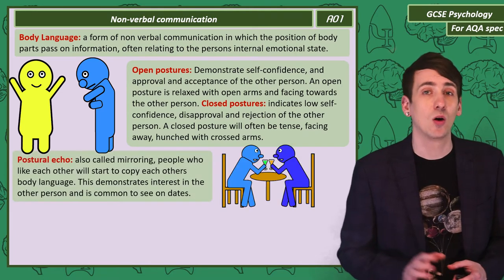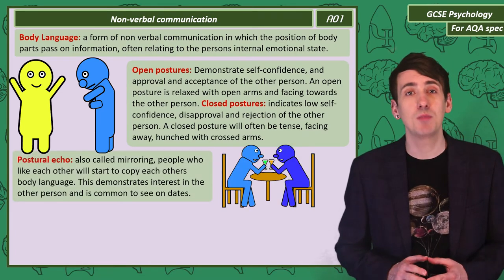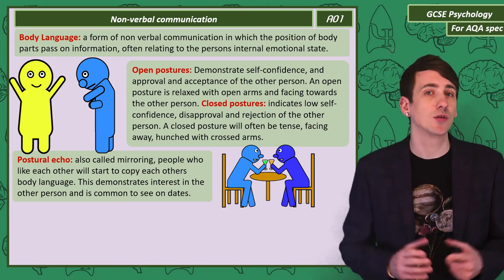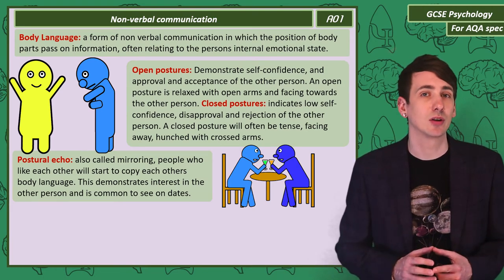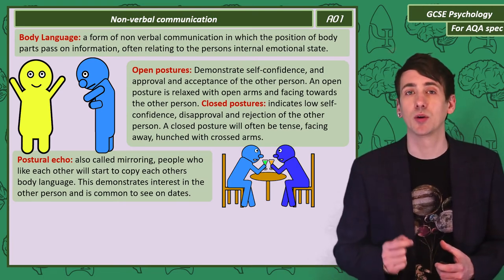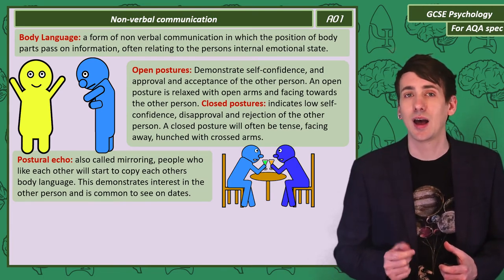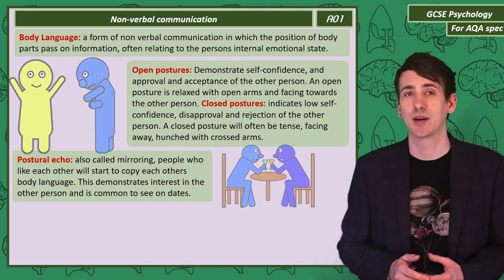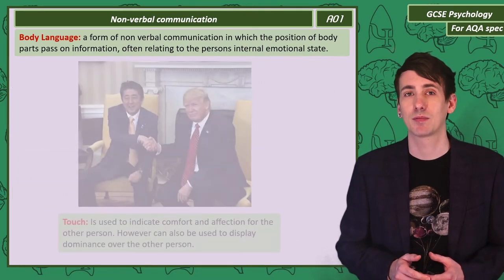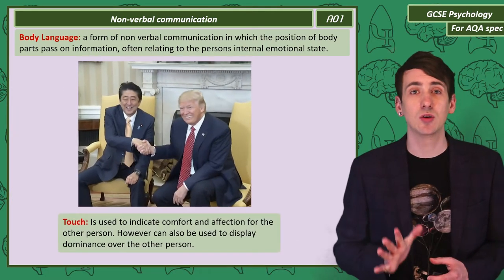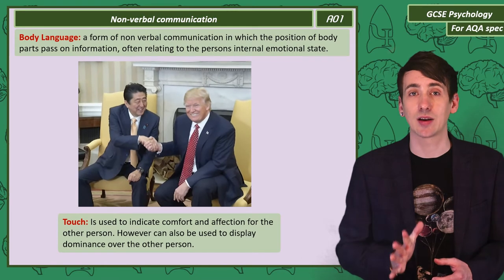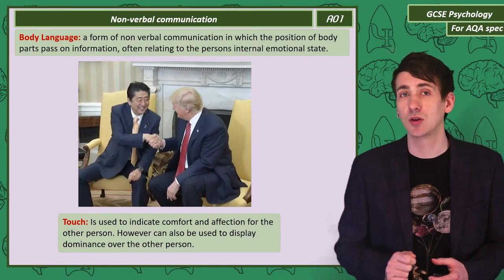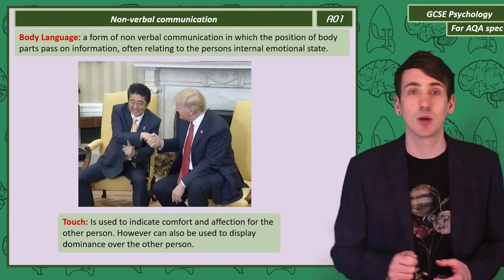Postural echo, also known as mirroring, is when people copy each other's body language. This is common in people who are flirting as it demonstrates interest in the other person. Touch is generally used to indicate affection for the other person, but it can also be used to indicate dominance.